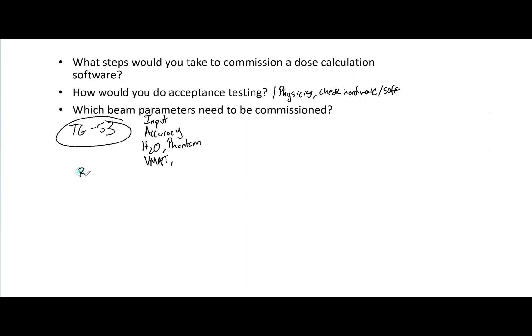Regarding which beam parameters need to be commissioned: first is the beam description — the energy, what you're going to call it, and what the default parameters are. You need to check the geometry, any type of beam modifiers such as trays, cutout factors, or any modifiers you might potentially have. You also want to define your field definitions, and you want to have information about your wedges and your normalizations. Be very familiar with beam configuration — what percent depth doses you've used and how you calculate your DLG.